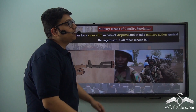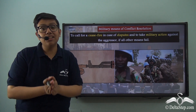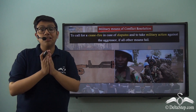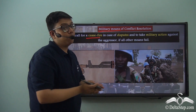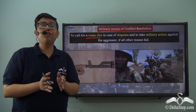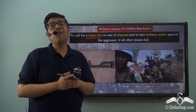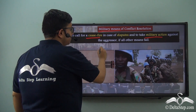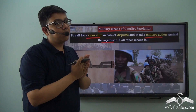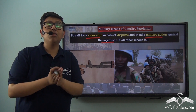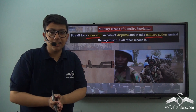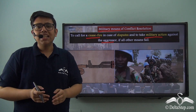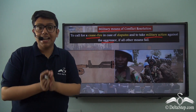If the pacific settlement of disputes and sanctions both fail, the United Nations Security Council can use military means of conflict resolution. This starts with the Security Council calling for a ceasefire, requiring both conflicting parties to lay down their arms. The Security Council achieves this through international cooperation and by stating that military action would be taken against the aggressor if all other means fail. Therefore, the Security Council can employ military operations on land, sea, and air when required. We see troops wearing blue helmets who are sent to conflicted areas to resolve these disputes.